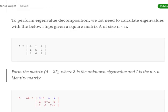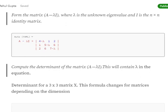Now form the matrix A minus lambda I. So A minus lambda I equals [[4 minus lambda, 1, 2], [1, 5 minus lambda, 6], [2, 6, 7 minus lambda]].